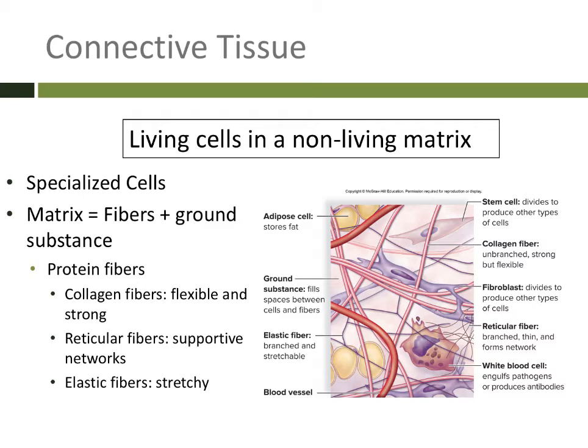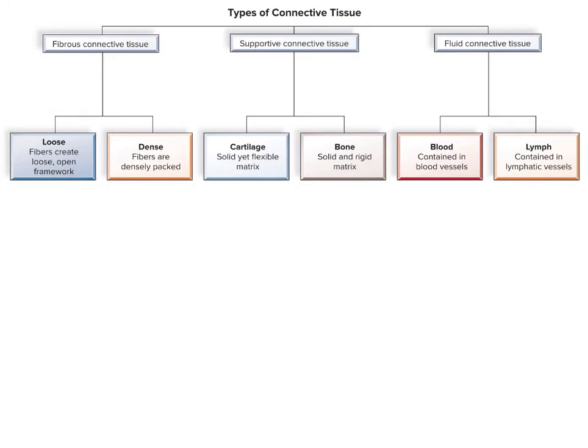A connective tissue that has a lot of collagen fiber is going to be very strong. A connective tissue with a lot of elastic fiber is going to be very stretchy. Reticular fibers are useful for surrounding and holding things together because they make a branched network. There is a lot of diversity in connective tissue, and we can break them into different types.